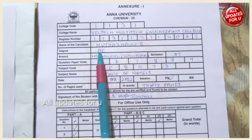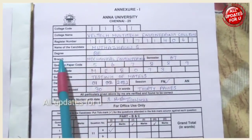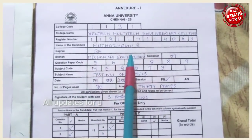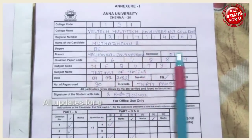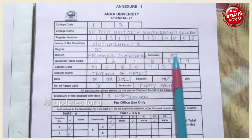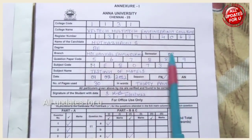Next, fill in your degree — B.E. or B.Tech. Then fill in your branch, for example Mechanical Engineering or Civil. Then fill in your semester — for example 07, 5, or 05.